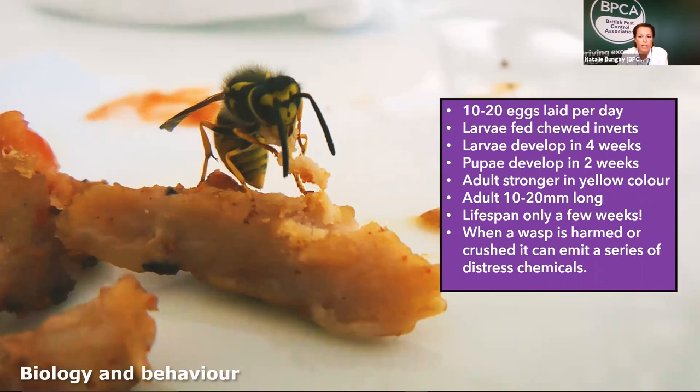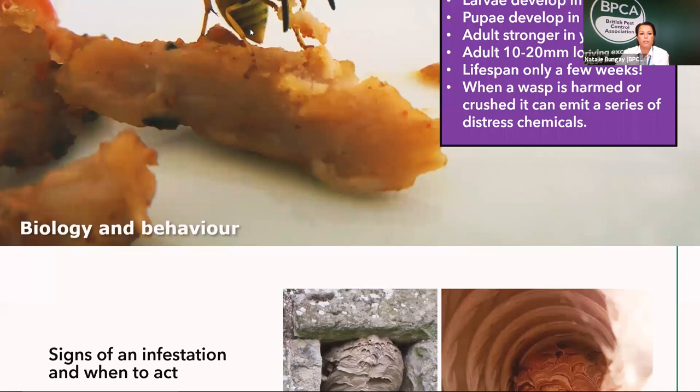When a wasp is harmed or crushed, it emits distress chemicals. We recommend not stamping on them, though that's a natural reaction. Coming up there's a diagram of the different toxic elements in a wasp sting, and one of them specifically relates to this distress chemical - just a bit of interesting information.